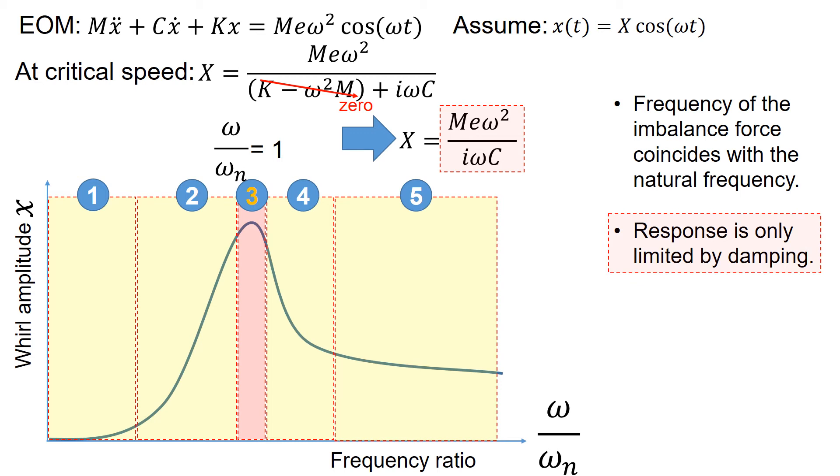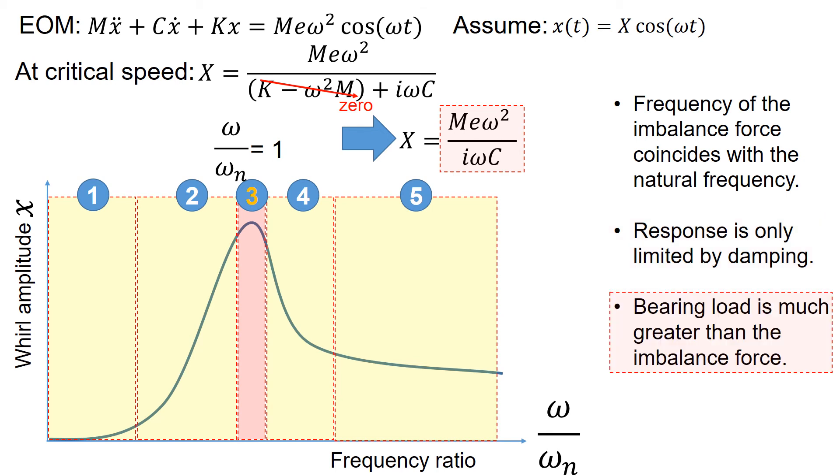At this critical speed, the rotor response can be reduced or amplified depending on how much damping you have. At this condition, typically, the bearing load is much greater than the imbalance force.